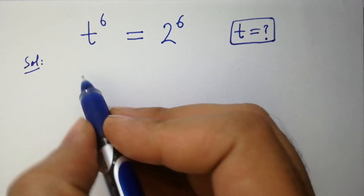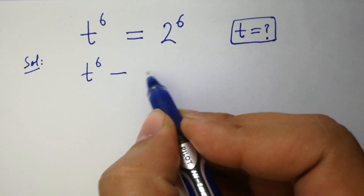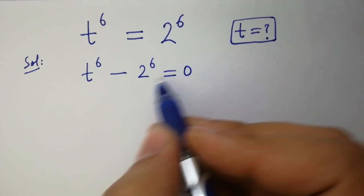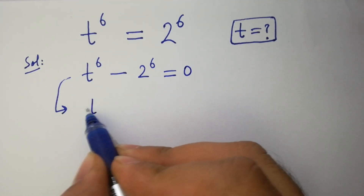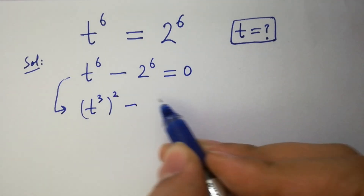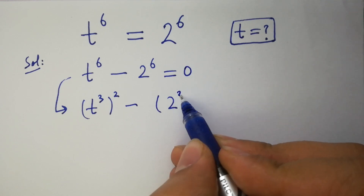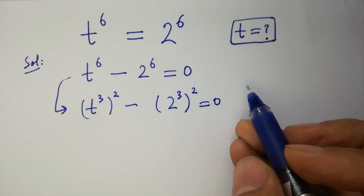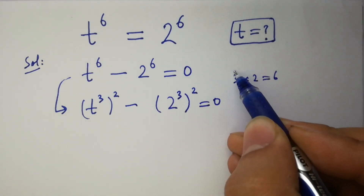It can be written as t to the power 6 minus 2 to the power 6 equal to 0, which is the same as t to the power 3, to the whole power 2, minus 2 to the power 3, to the whole power 2, equal to 0, since 3 times 2 equals 6.